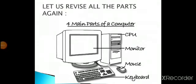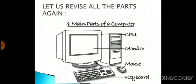We have studied the four main parts of computer in this chapter. Now let us revise all the parts again. The four main parts of a computer are: first, monitor; second, CPU; third, keyboard; and fourth, mouse.